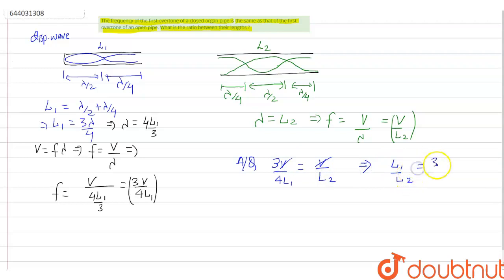is equal to 3 by 4. That's what you asked in the question, to find the value of the ratio of their lengths, so L1 upon L2 gives 3 by 4. Thank you.